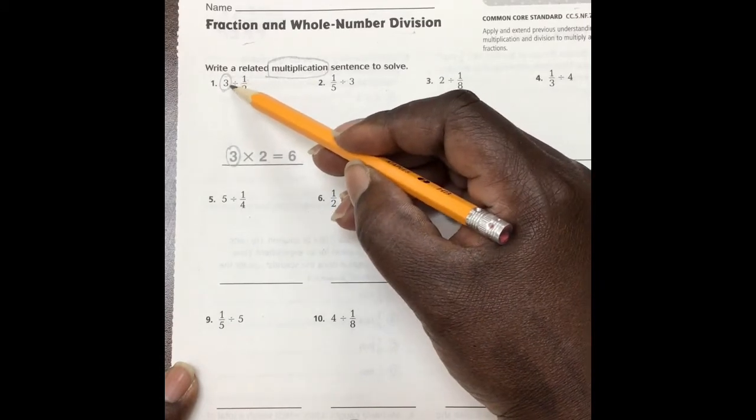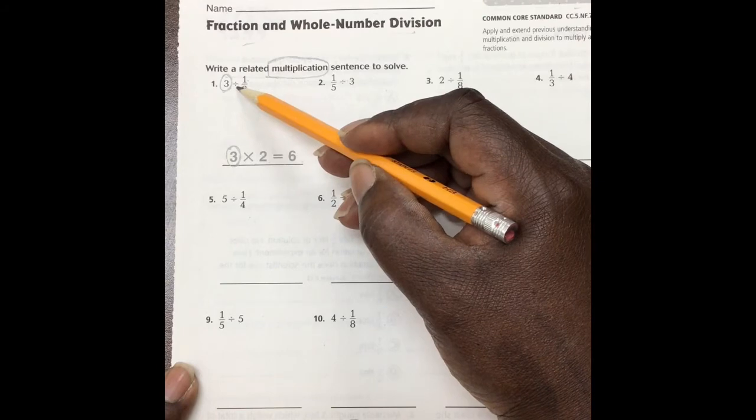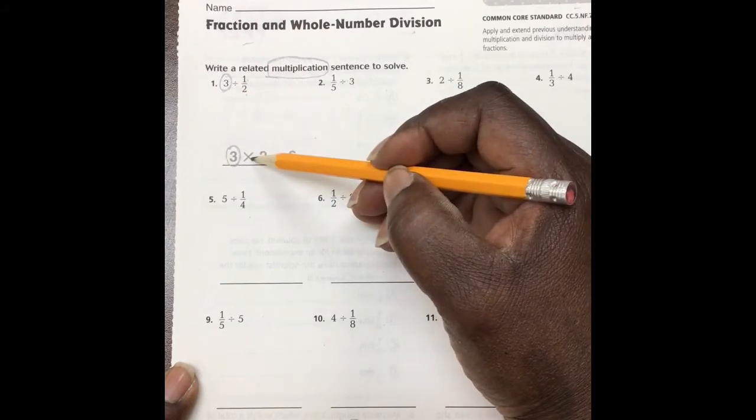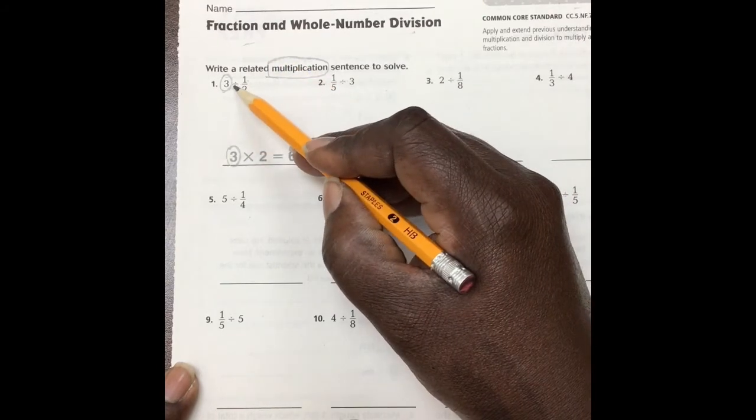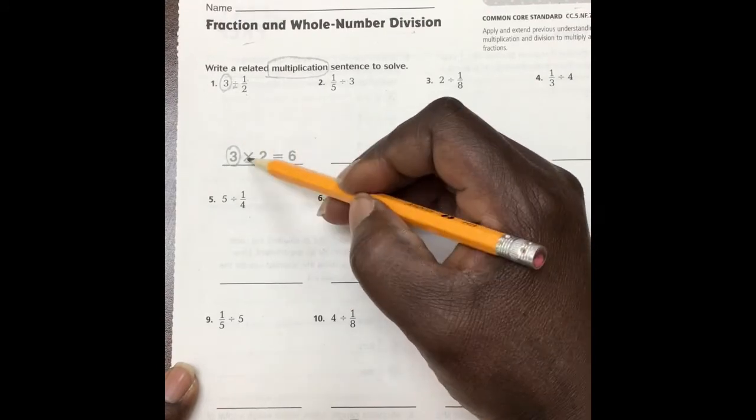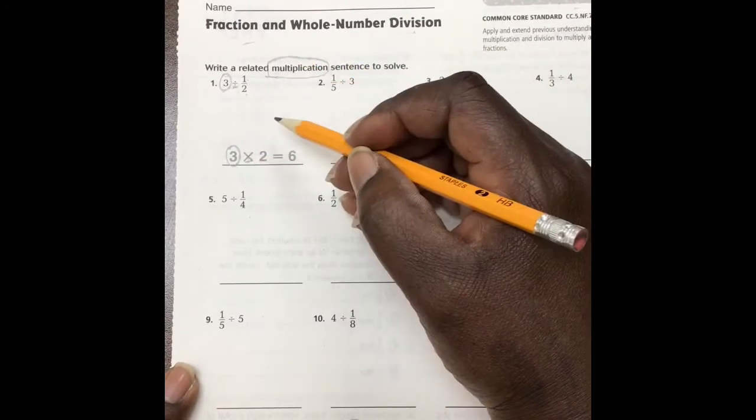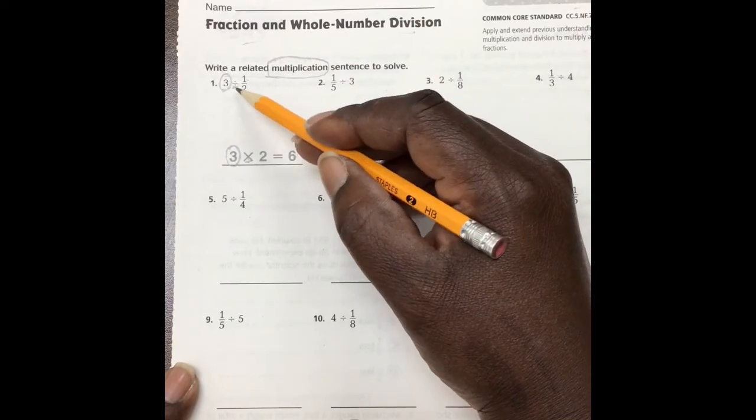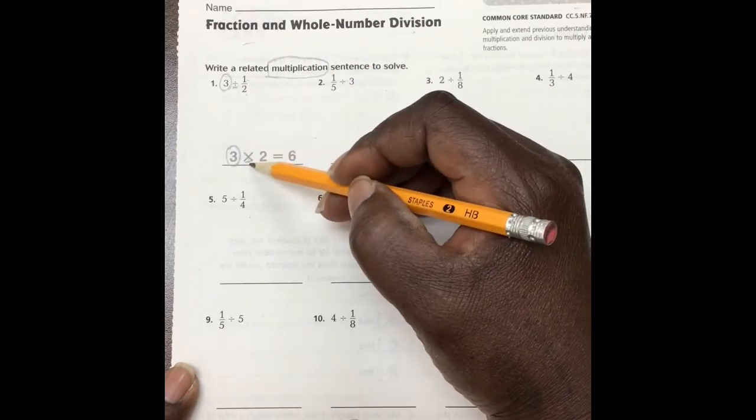Now, we see 3 divided and we compare. We see this has changed to multiplication. That's the opposite of what we know as inverse. So, instead of dividing, we multiply.